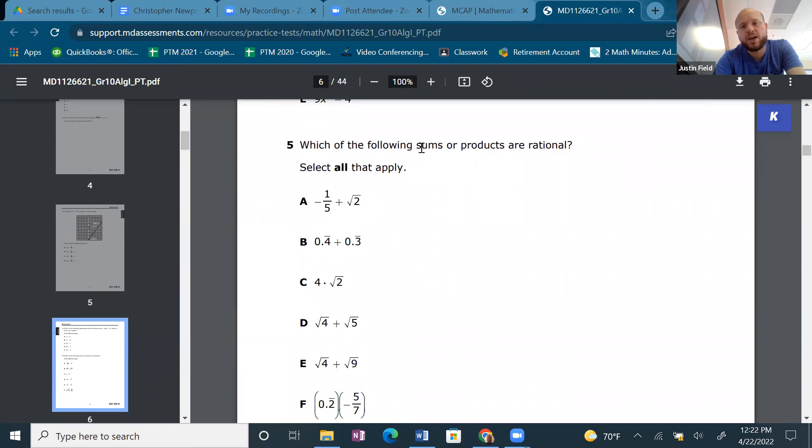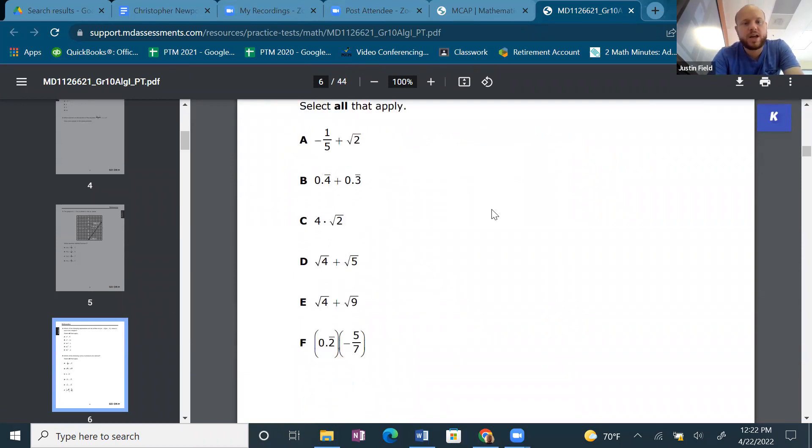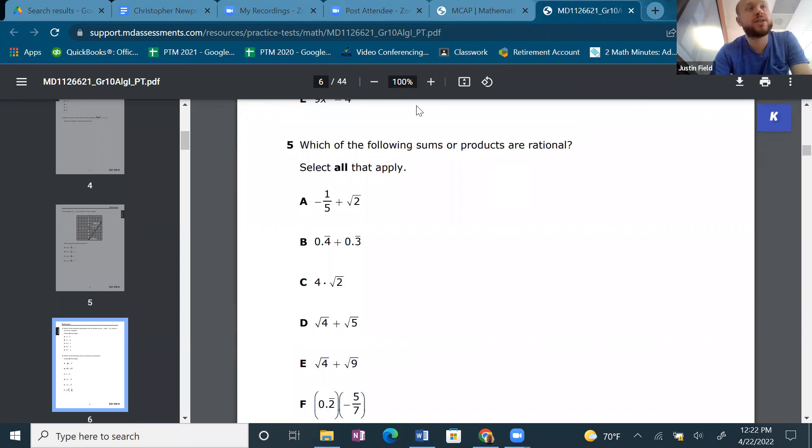Which of the following sums or products are rational? Ah-ha, so rational. What is a rational number? Because we don't really talk a lot about this in Algebra 1, and then they put it on the test. So rational is anything that can be written as a fraction.